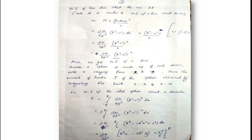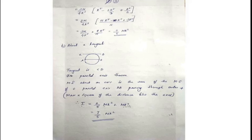Using symmetry, this equals 2 × ∫ from 0 to R of [3M / (8R³) × (R² − x²)²] dx. After integrating, we get 3M / (4R³) × [R²x − 2R²x³/3 + x⁵/5]. After applying the limits, the moment of inertia of the sphere about the diameter is equal to 2/5 MR².